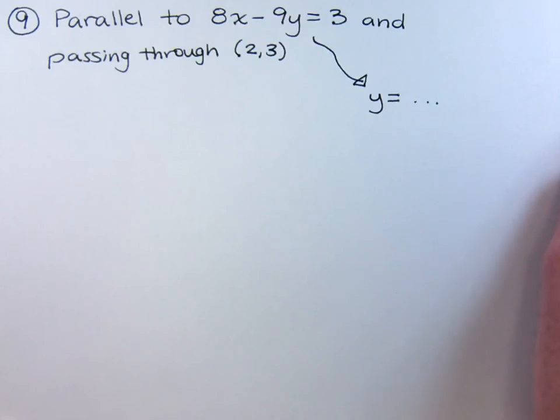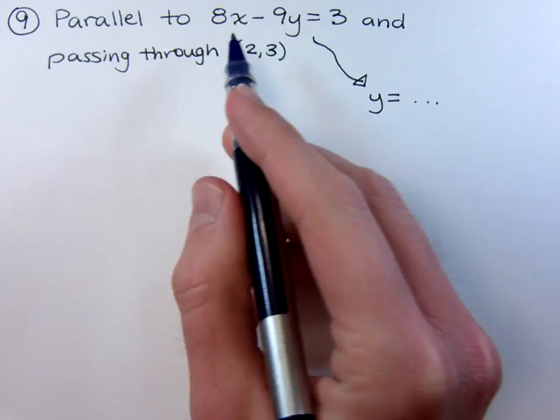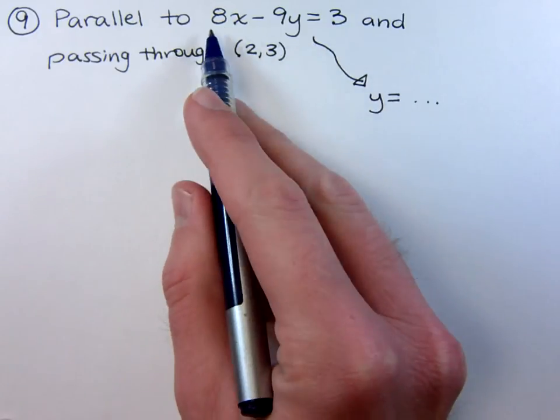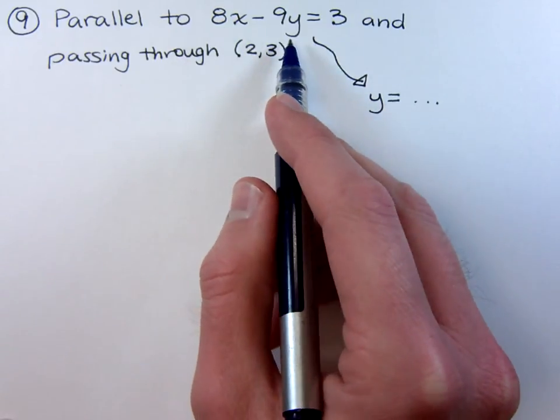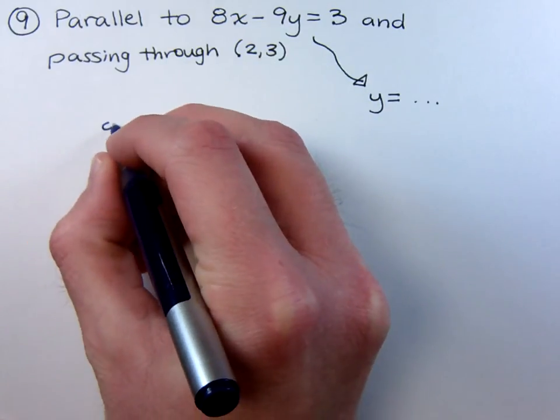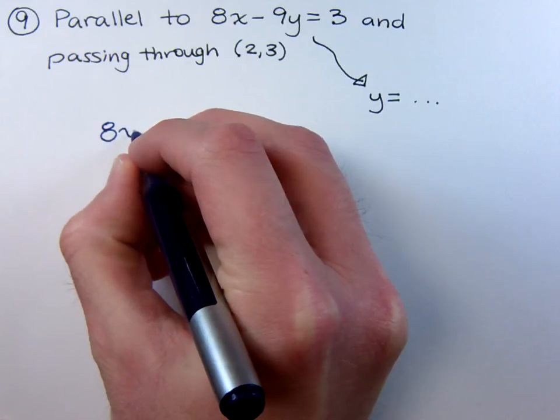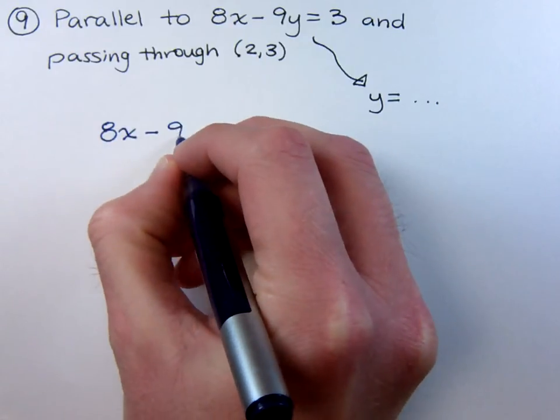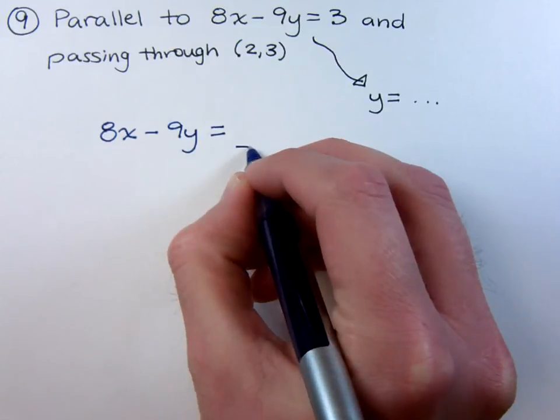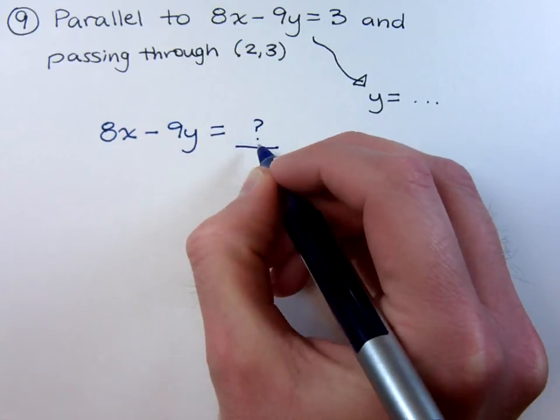As I showed you in the video just before this one, if you have something that is in standard form and you want it to be parallel, keep the ax plus by part exactly the same. So we know that to be parallel to this guy, we're going to start off with 8x minus 9y. And it's just a matter of figuring out what is this number supposed to be over here.